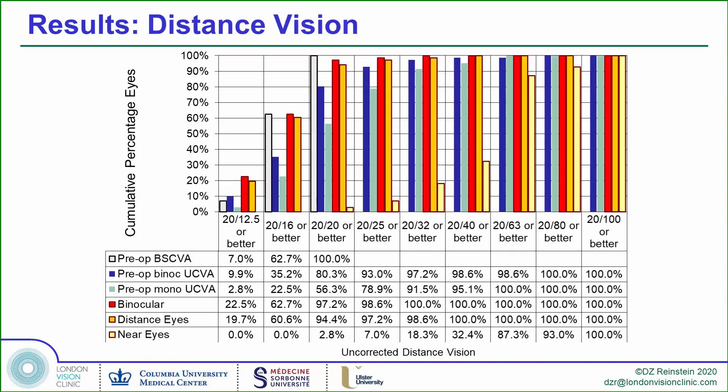Looking at the distance vision results, the post-op binocular distance uncorrected vision was excellent, with 97% of patients seeing 20/20. Interestingly, the monocular distance vision was slightly less due to loss of summation, yet even 87% of the non-dominant near eyes were 20/20 or better at distance.